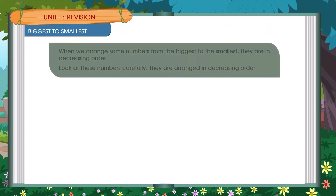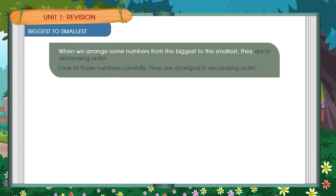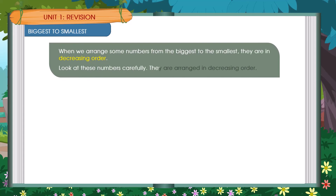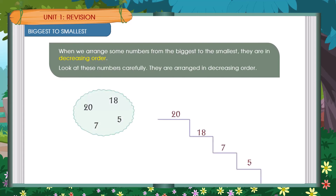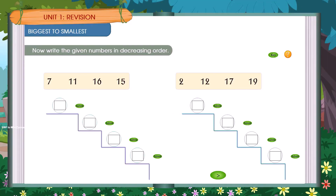Biggest to smallest. When we arrange some numbers from the biggest to the smallest, they are in decreasing order. Look at these numbers carefully — they are arranged in decreasing order: 20, 18, 7, 5. Now write the given numbers in decreasing order.